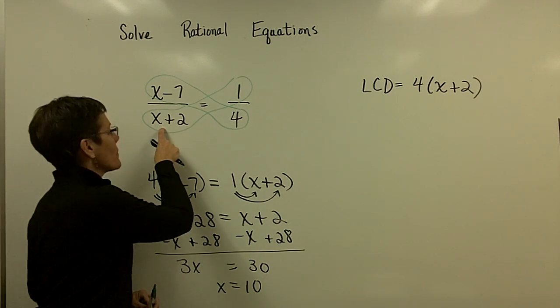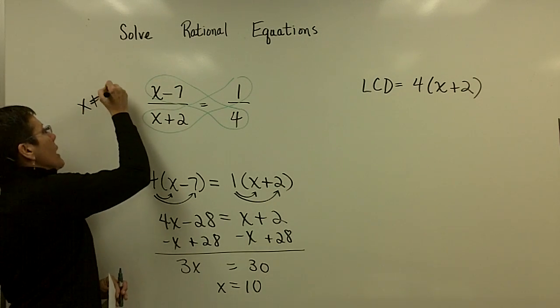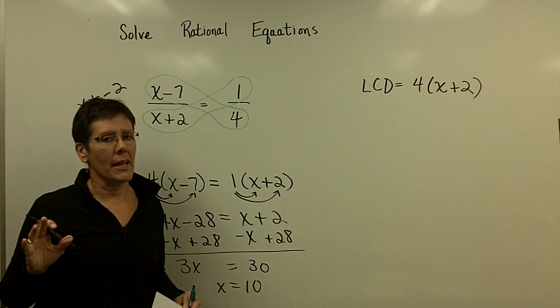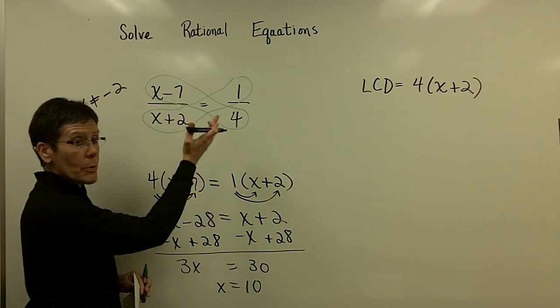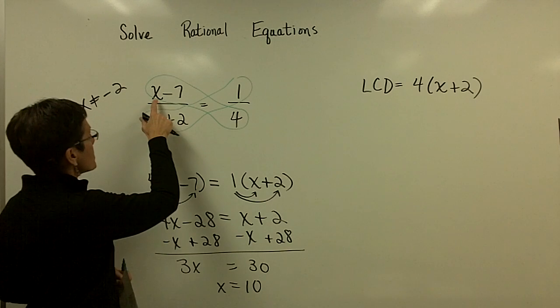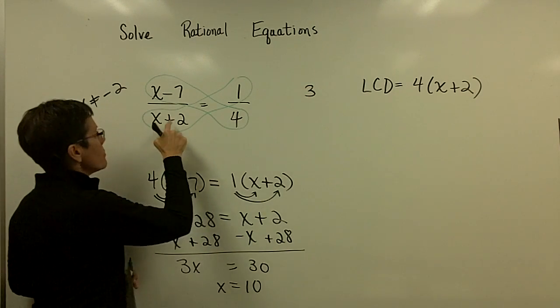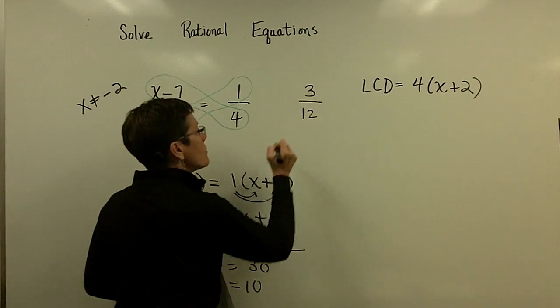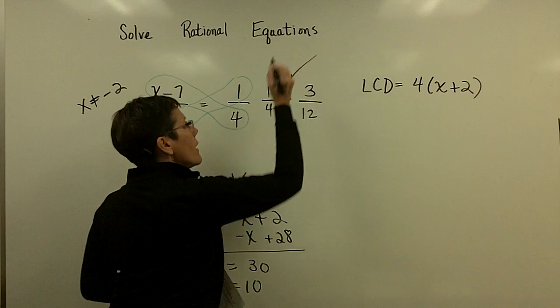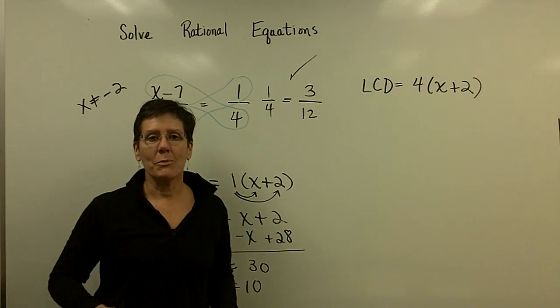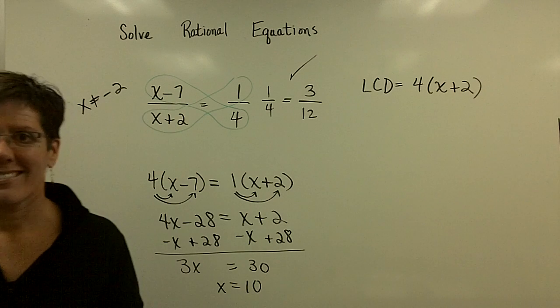The only restriction on this problem was that x could not equal negative 2. x turned out to be 10. I should put it in the original problem and see if it checks. I almost can do that in my head. 10 minus 7 is 3. 10 plus 2 is 12. 3/12. Is that equal to 1/4? Yeah, it sure is. We'll take a break and we'll come back and we'll solve some more rational equations. Thank you.